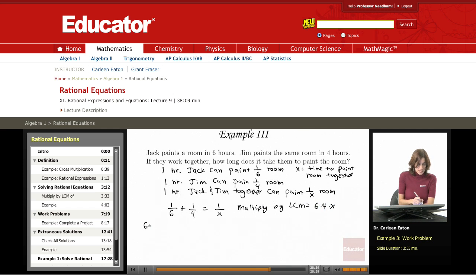So 6 × 4 × X × 1/6 plus 1/4 × 6 × 4 × X equals 1/X × 6 × 4 × X. Let's see what we can cancel.